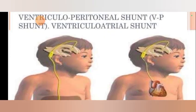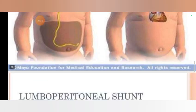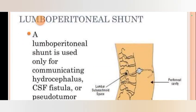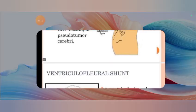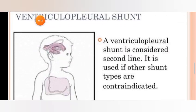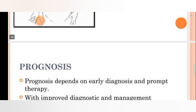This diagram shows the ventriculo-peritoneal and arterial shunt placements. A lumbo-peritoneal shunt is used only for communicating hydrocephalus, CSF fistula, or pseudotumor cerebri. A ventriculo-pleural shunt is considered a second-line option and is used if other shunt types are contraindicated.